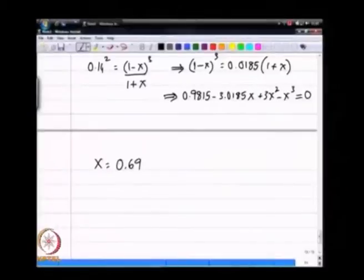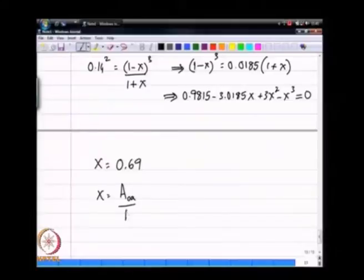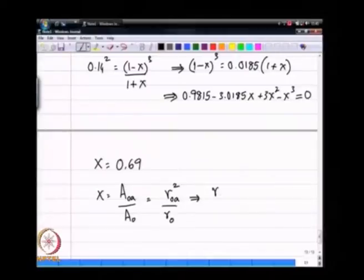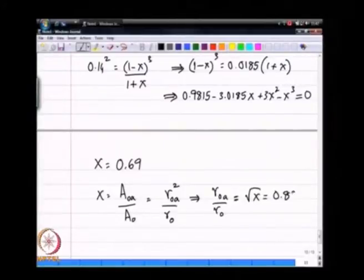Let us make some simplifications. x by definition is the cross sectional area of the air core divided by the exit cross sectional area for the flow. This would be r0a squared divided by r0 squared, so r0a divided by r0 is square root of x which in this case is 0.83.